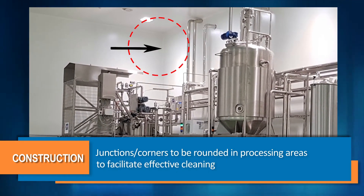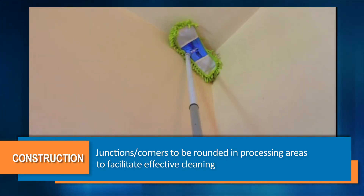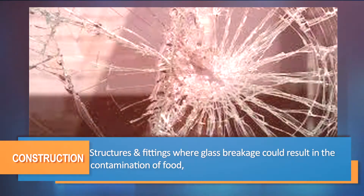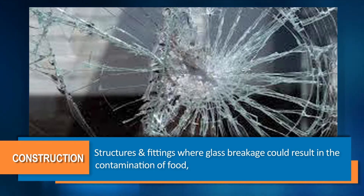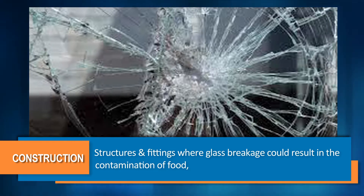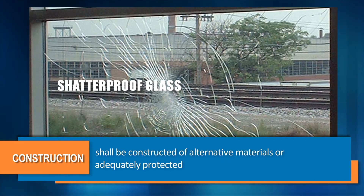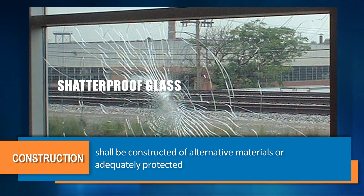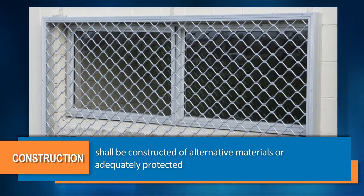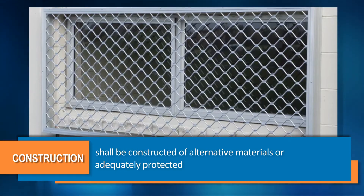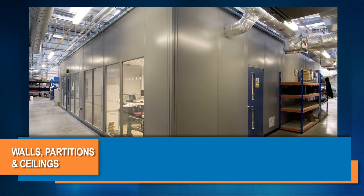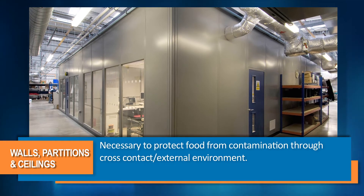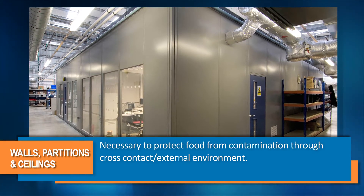It should not provide pest entry and harborage. Where appropriate, all junctions and corners should be rounded in processing areas to facilitate effective cleaning. Structures and fittings where glass breakage could result in contamination of food shall be constructed of alternative materials or be adequately protected.